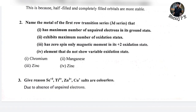Which element has zero spin-only magnetic moment in its plus-2 oxidation state? The answer is zinc. Zinc also does not show variable oxidation states. It has zero spin-only magnetic moment in its plus-2 oxidation state.